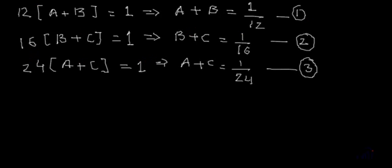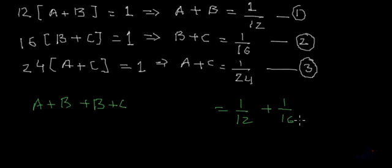So one way is to find the working capacities of A, B and C individually. Right? And then you add their working capacities and solve it. But I have one smart way. What I am going to do is I am going to add all three equations. So I will get A plus B is equal to 1 by 12. This is what equation 1 is saying. And if I add equation number 2 over here, so on the left hand side we will get B plus C. And on the right hand side we will add the right hand side of equation 2 which is 1 by 16.